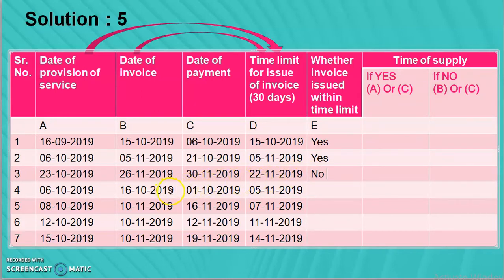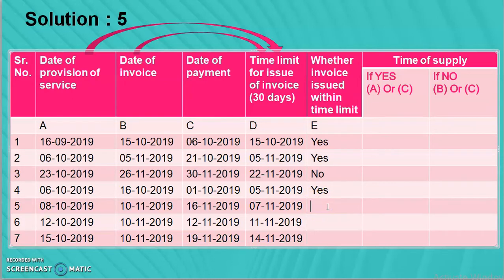Next case: date of invoice is 16-10-2019, and time limit is 5-11-2019 — invoice issued within time limit, so yes. Fifth case: invoice issued on 10-11, but time limit was 7-11 — date has crossed, so no. Sixth case: invoice issued on 10-11, time limit is 11-11 — within time limit, so yes. The comparison is straightforward: just check whether the invoice date falls before or after the time limit.